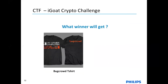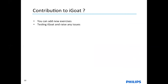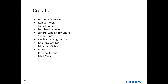The winner will get a cool OWASP T-shirt and a copy of my book Learning iOS Penetration Testing, which will help you learn end-to-end iOS pen testing. I would also invite you to contribute to the iGoat project. You can add new exercises, suggest attacks, or if you find an interesting issue in a bug bounty program you can later develop it into iGoat. You can raise issues on GitHub, and write blogs and articles about iGoat. These are the references, and I'd like to thank contributors from all over the world who are continuously supporting this project.